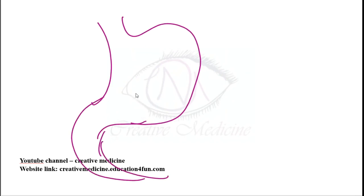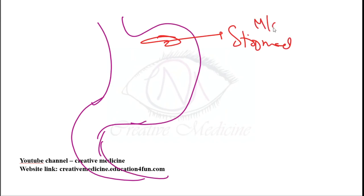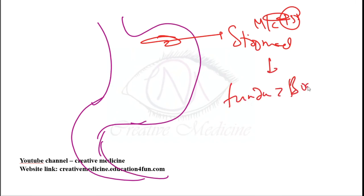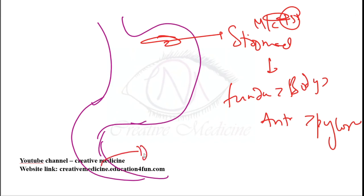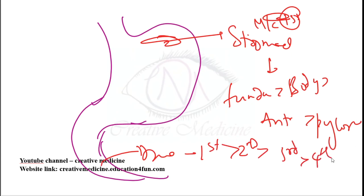Stress ulcers in the stomach are most commonly seen first in the fundus, followed by body, antrum, and then pylorus. In the duodenum, stress ulcers are seen in the first part, followed by the second, third, and fourth parts.